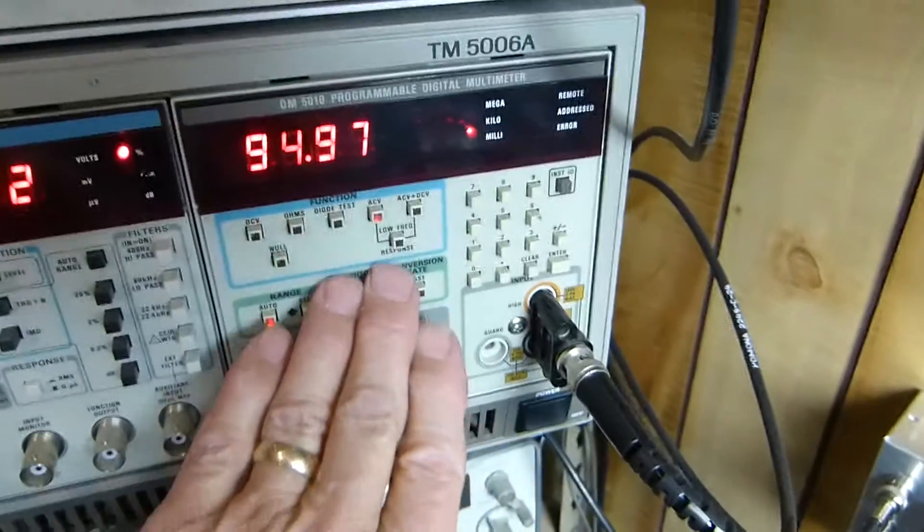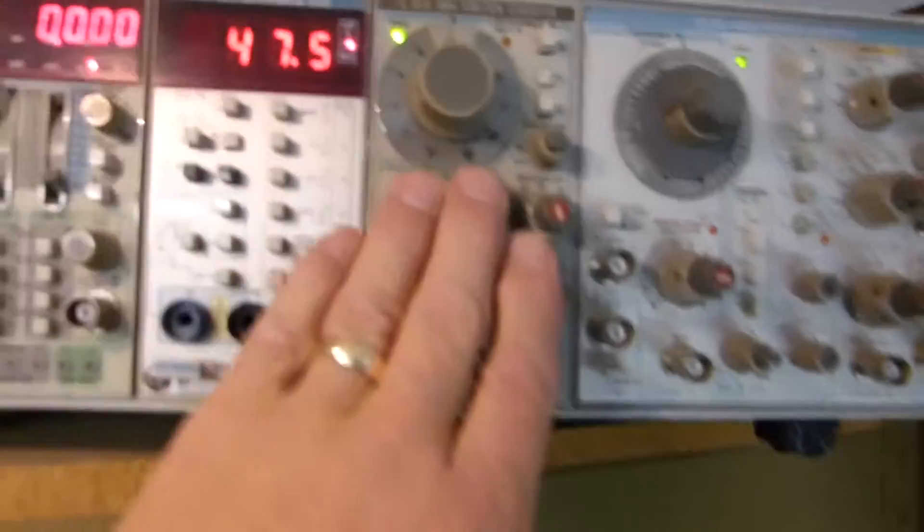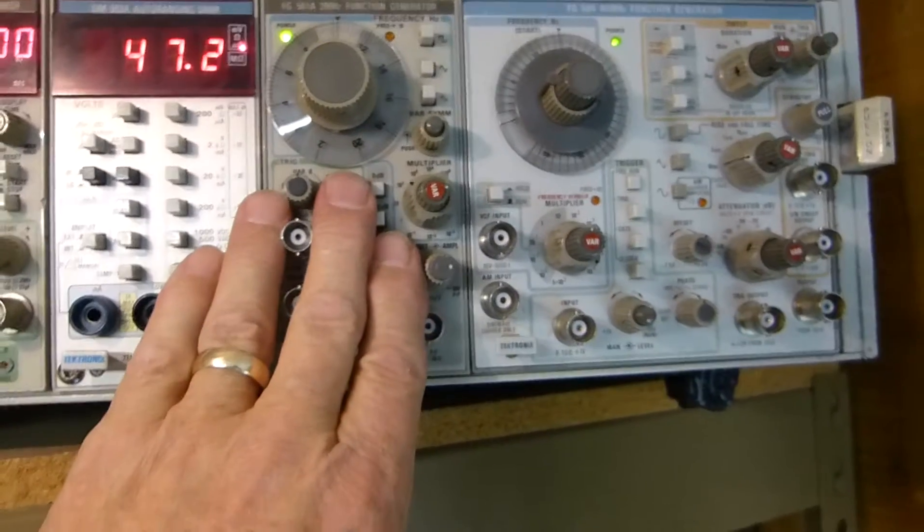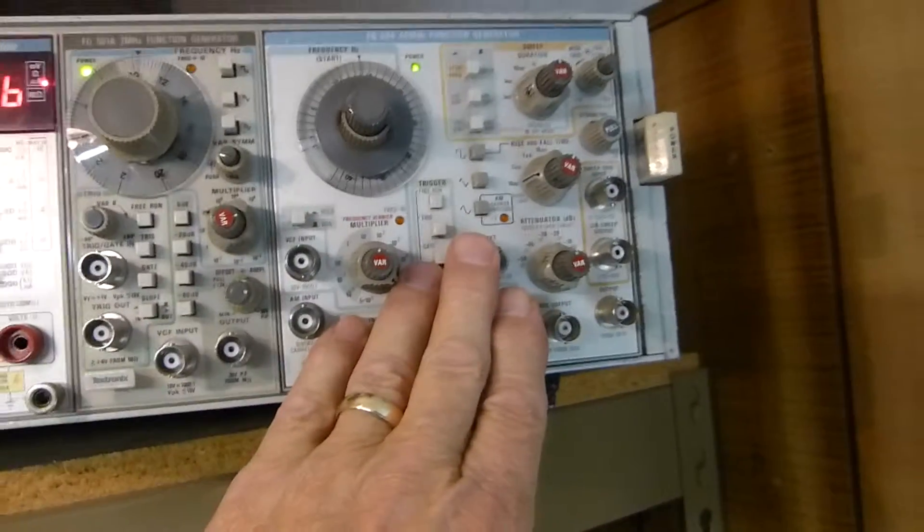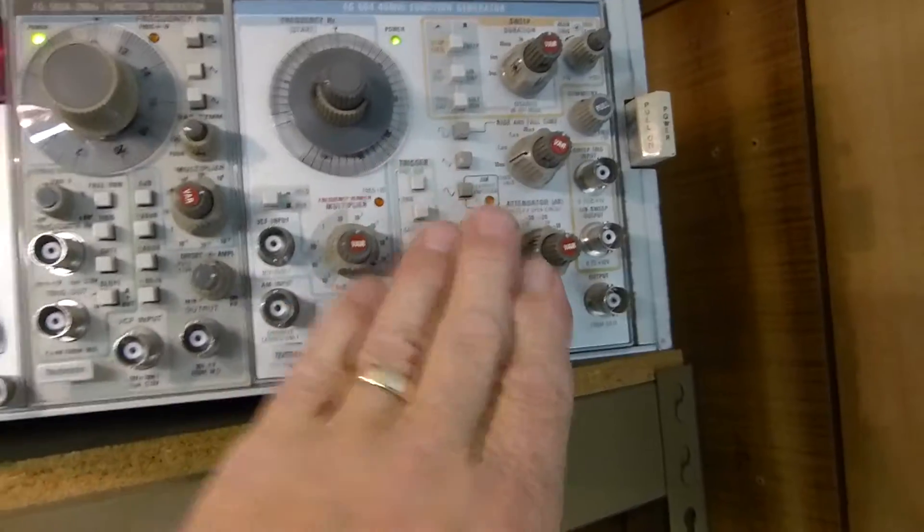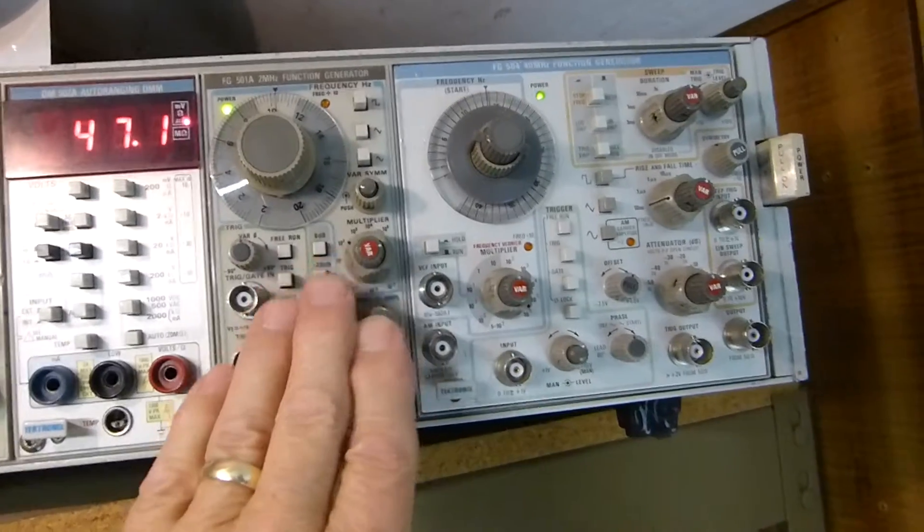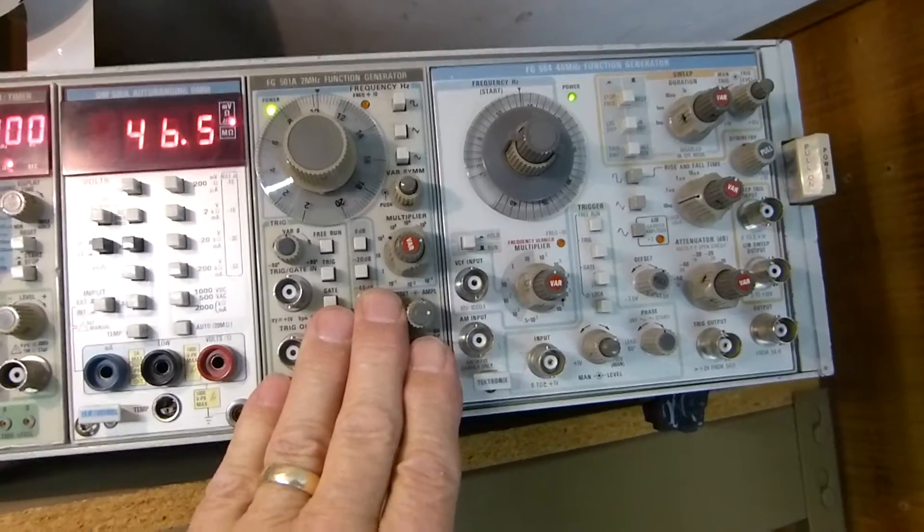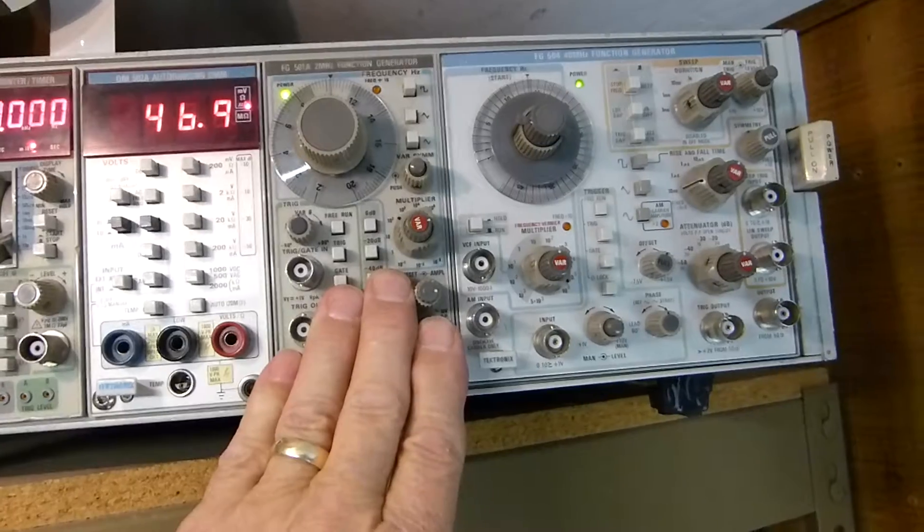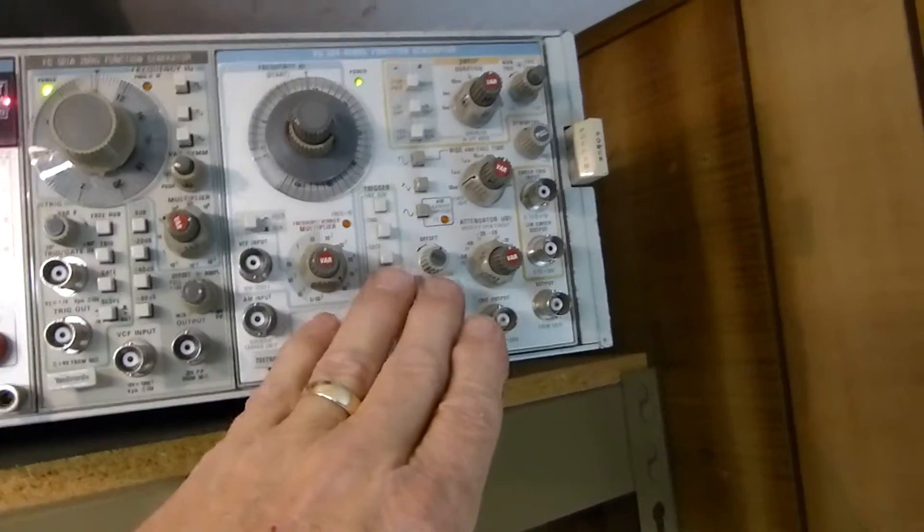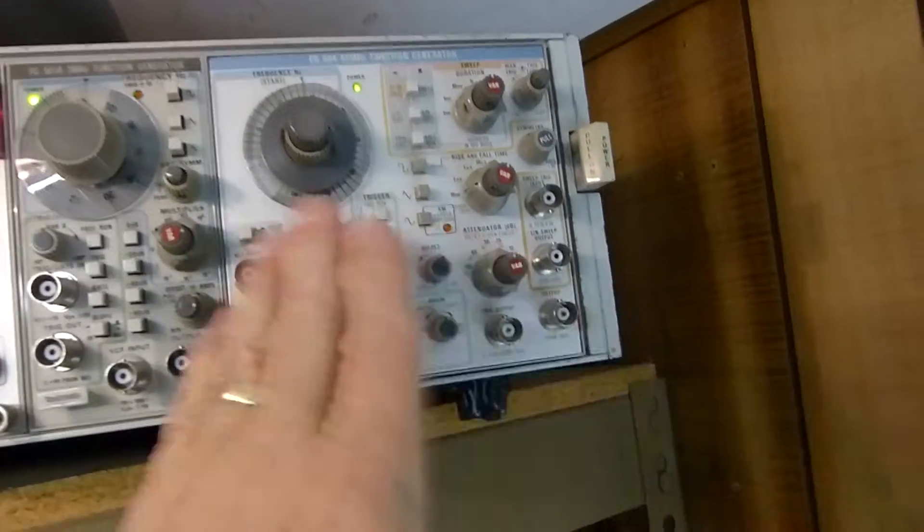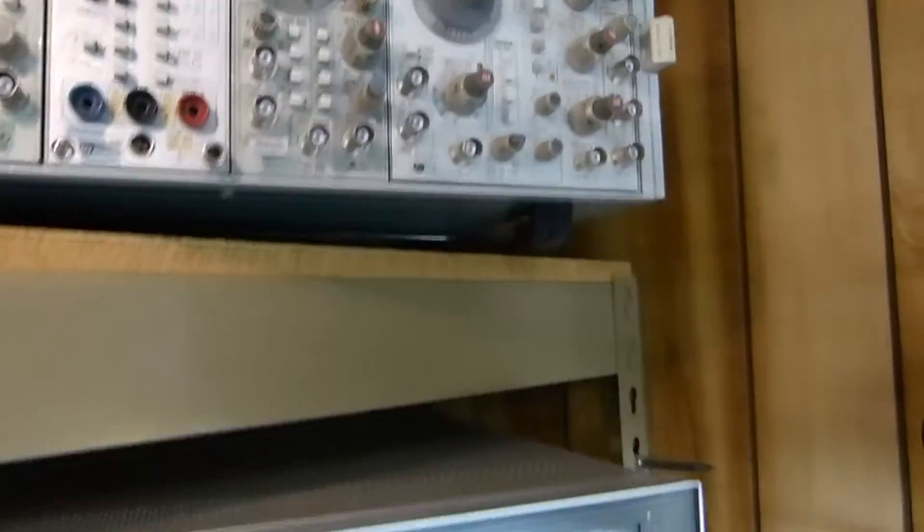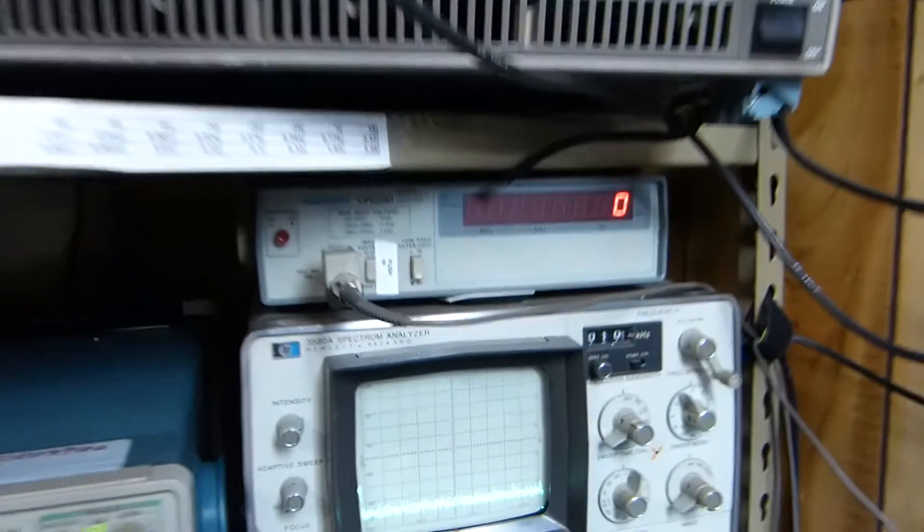This function generator will do everything that this one will, except this one will scan and this one will not. This will give you a square wave, sine wave, and triangular wave. This will give you all that plus a little bit more, and you can scan frequencies with it.